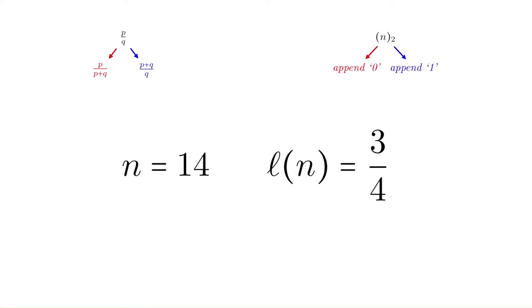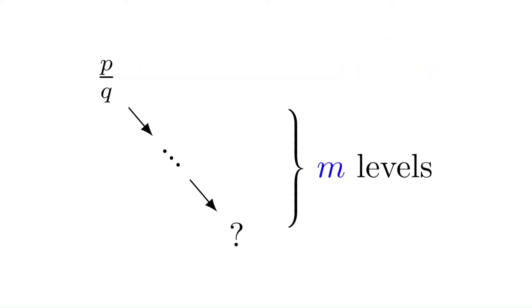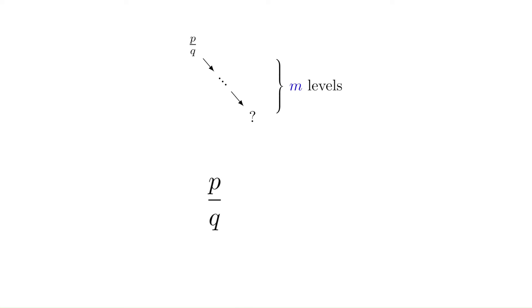This process was faster, but we still had to perform the left and right rules one at a time. So let's see what multiple movements in a row look like algebraically. Here's what m right movements looks like in the tree. We begin at p over q and apply the right rule m times. This simplifies nicely to m plus p over q.